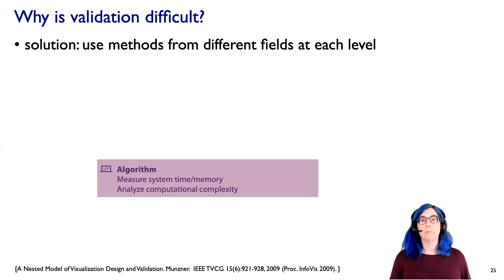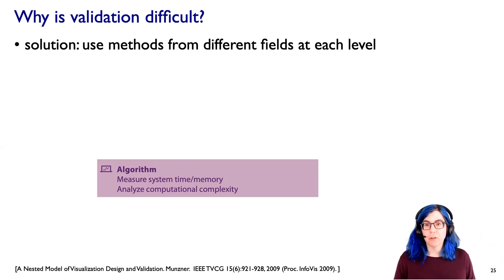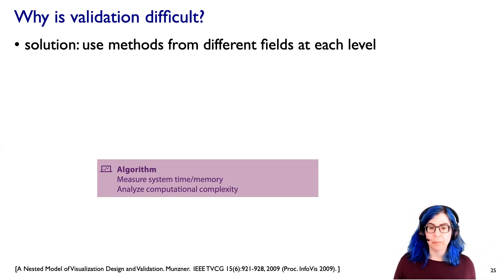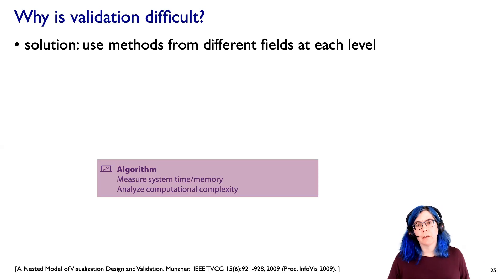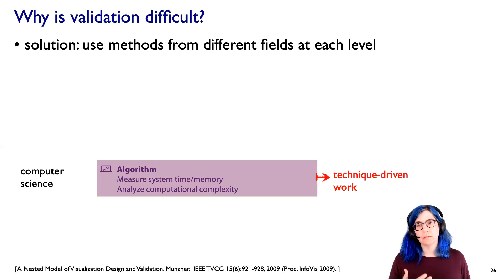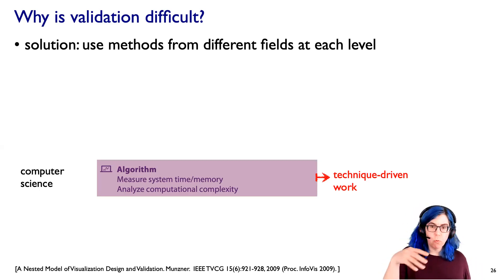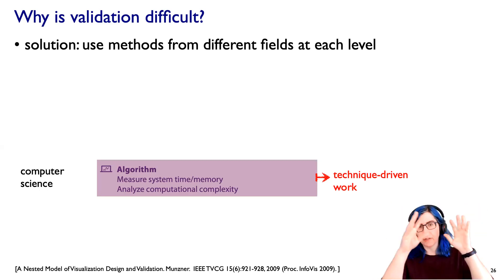The solution is we need to be interdisciplinary and have a grab bag of methods — picking methods from different fields at each level. At the algorithm level, we can do computational benchmarks to measure system time and memory, or for the more theoretically inclined, analyze computational complexity. These methods are well taught in a traditional computer science department. A huge amount of work in visualization does exactly this — I'll call that technique-driven work, where you understand the context and focus on algorithmic problems.